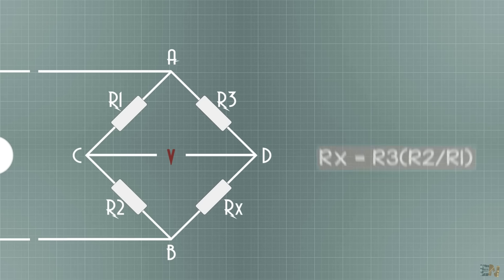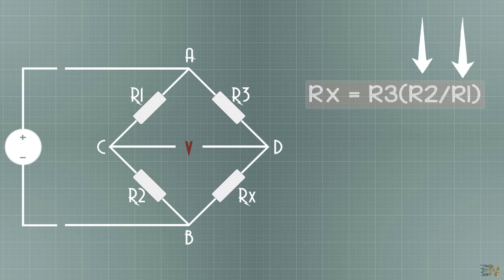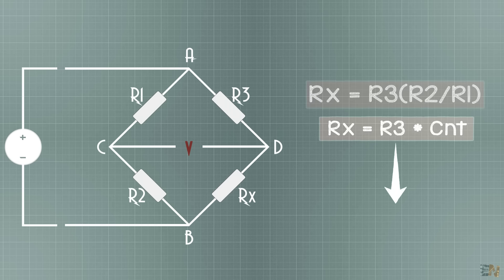So why is this important? Well, if R1 and R2 are a constant value, let's say 20 ohms, Rx will be equal to R3 multiplied by a constant value. So by changing the R3 value, we could get that to be equal to the Rx value and in that way we have zero volts between C and D.